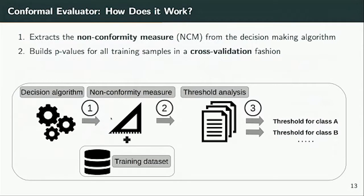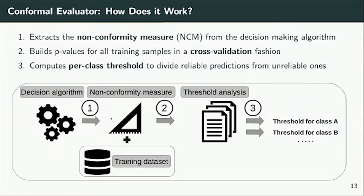Once we have all the scores for all objects under examination, we build p-values for all training samples in a cross-validation fashion. We use leave-one-out cross-validation so we can give a p-value for all objects. Then we have p-values for every object for every class — every object has a number of p-values equal to the number of classes. We then compute a per-class threshold used to provide the quality of predictions: predictions with a p-value above this threshold are considered reliable, and those below are considered unreliable.